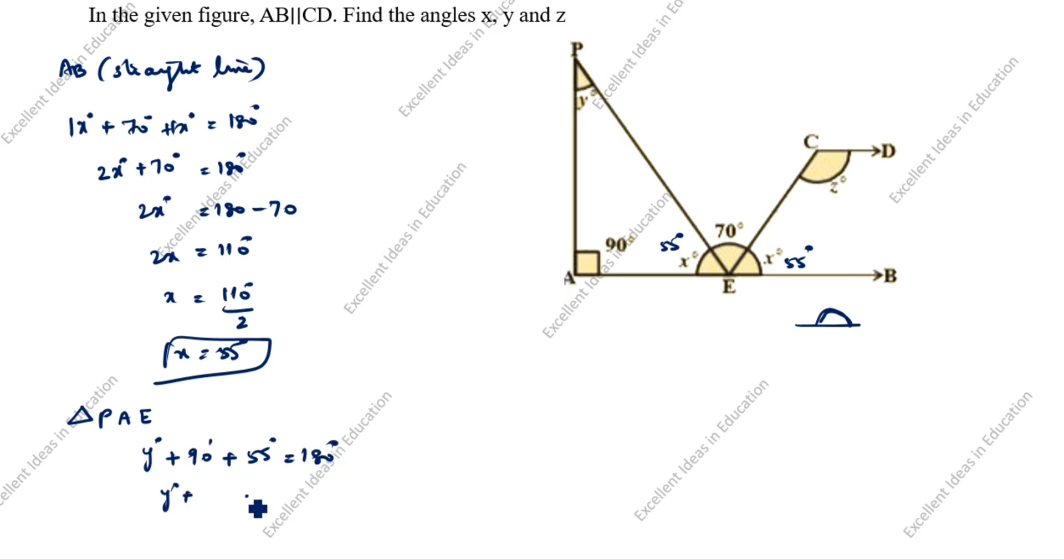y degrees plus 90 plus 55 equals 180 degrees. y degrees plus 145 equals 180 degrees. y is equal to 35 degrees.